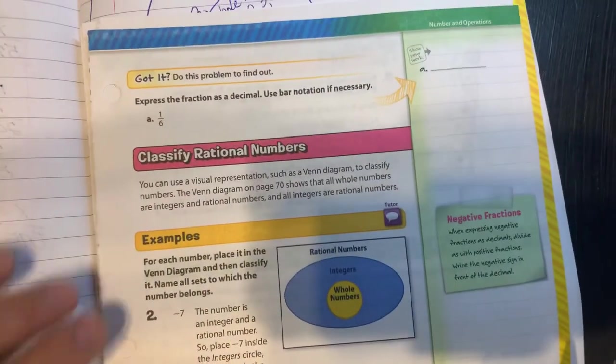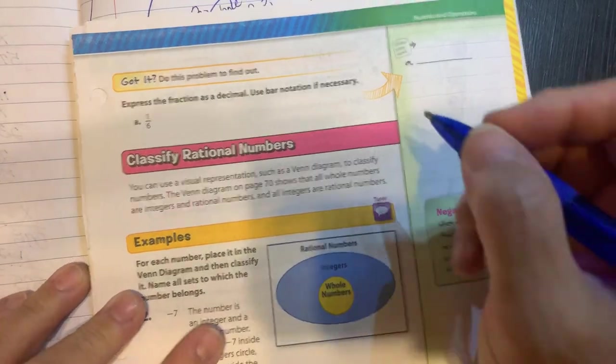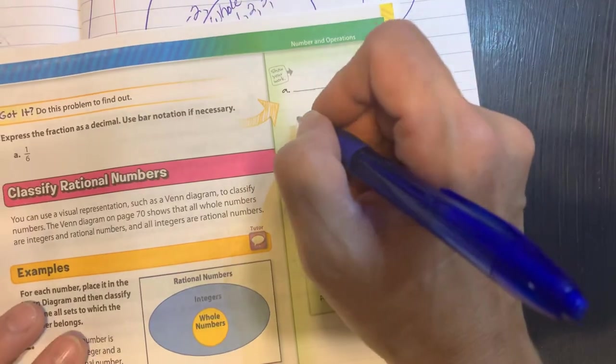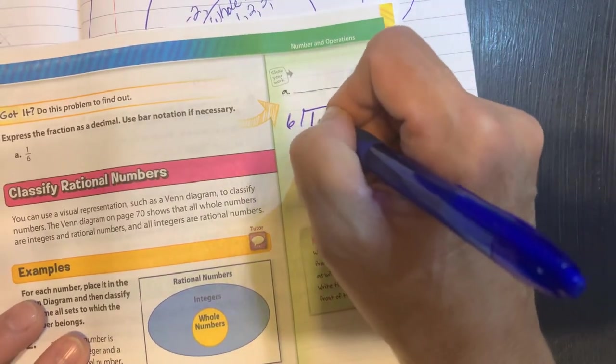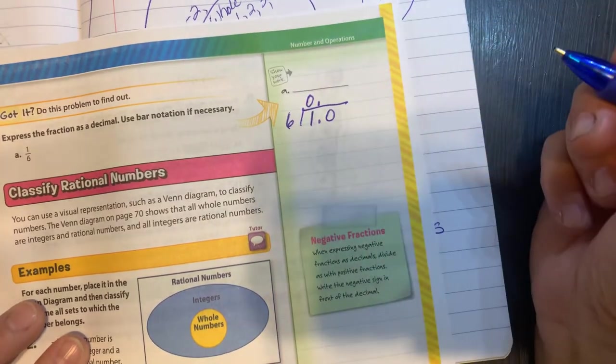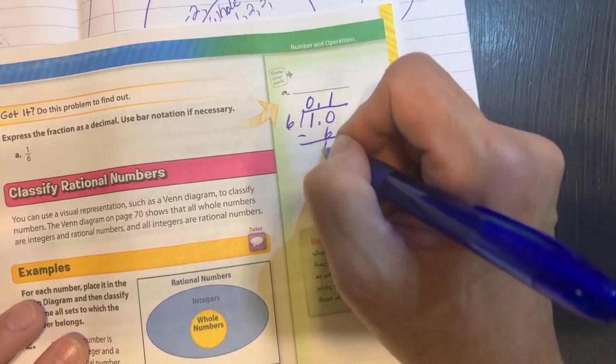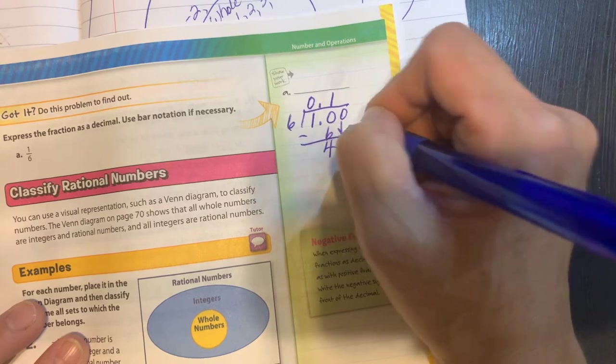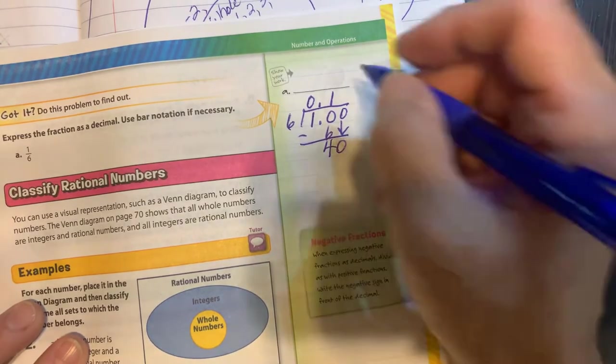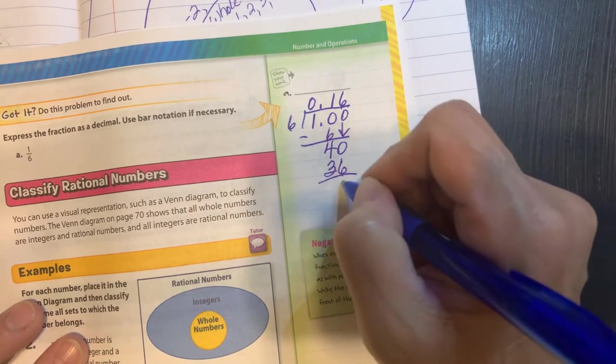On page 71, it has an example at the top, or a practice problem for us to do. You've got 1/6. So we're going to divide, I'm going to go over here and do it. We're going to divide 6 into 1.0. Will 6 go into 1? No. Will 6 go into 10? Yes. We subtract. 10 minus 6 is 4. Next is 0. Bring it down. 6 will go into 40. That would be 6 times, which is 36.